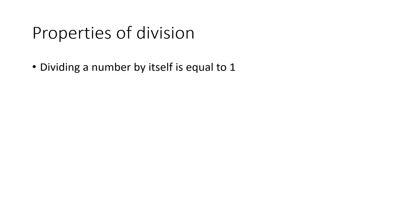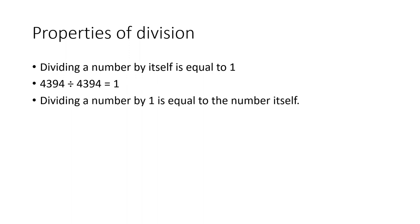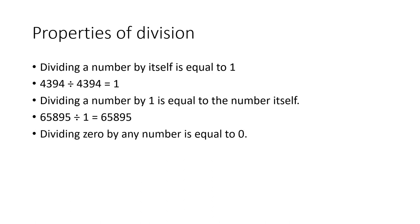Let us see a few properties of division. First: dividing a number by itself equals 1 — for example, 4394 divided by 4394 equals 1. Second: dividing a number by 1 equals the number itself — for example, 65,895 divided by 1 equals 65,895. Third: dividing 0 by any number equals 0 — for example, 0 divided by 12,156 equals 0.